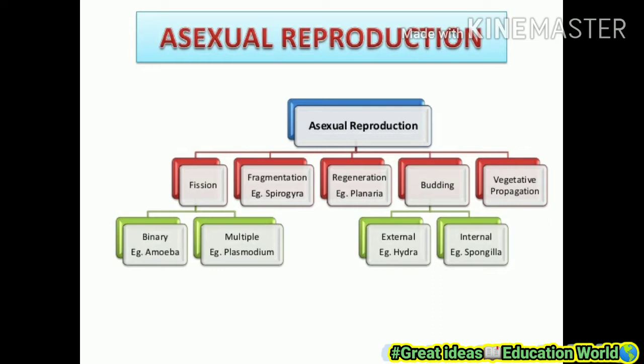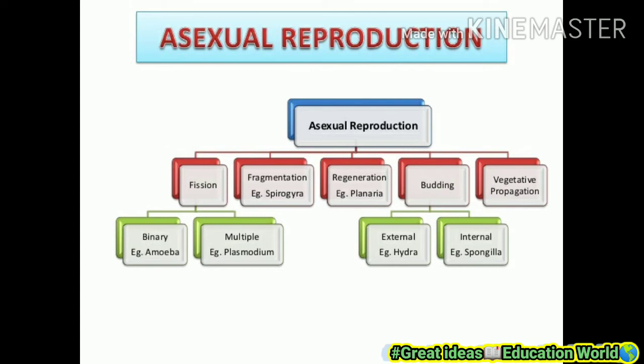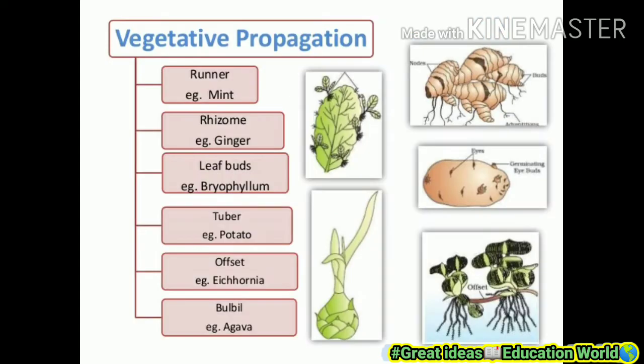The five types of asexual reproduction are: fission, fragmentation, regeneration, budding, and vegetative propagation. Fission is of two types: binary fission and multiple fission. Budding is also of two types: external budding — for example in hydra — and internal budding — for example in spongilla. Next, we understand vegetative propagation.